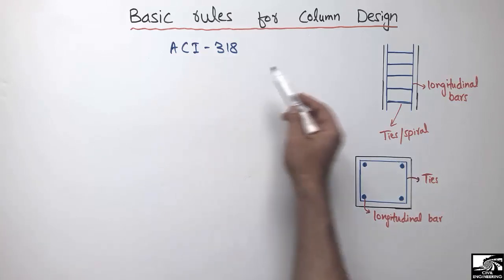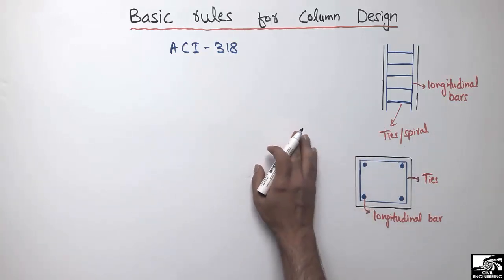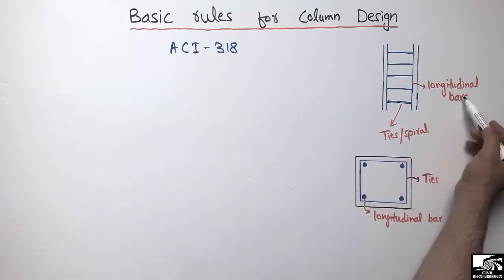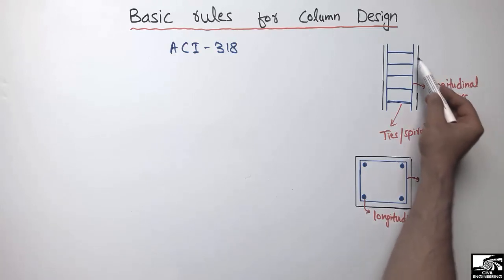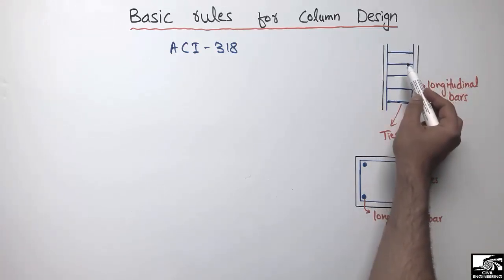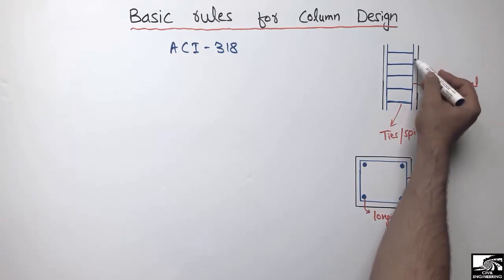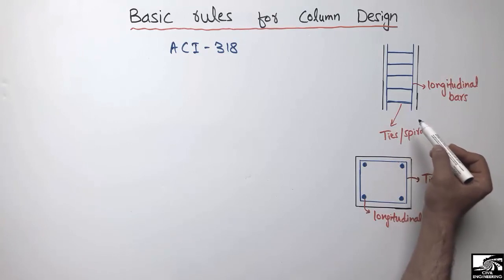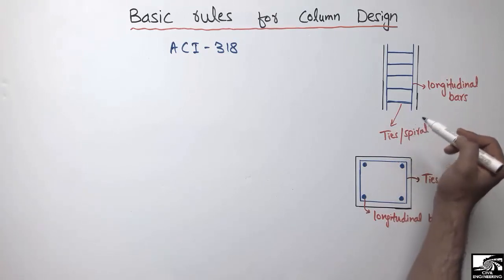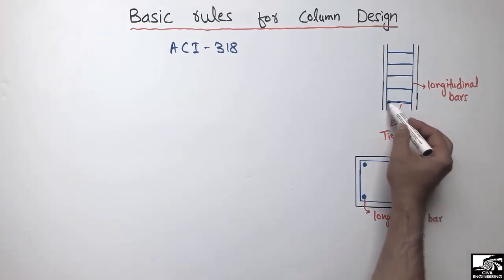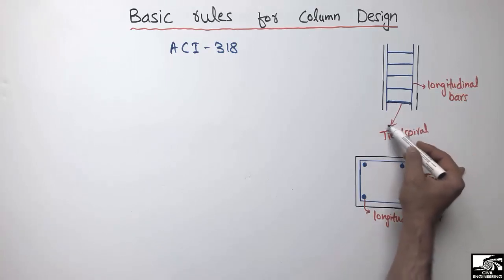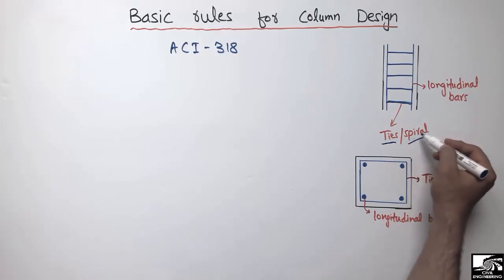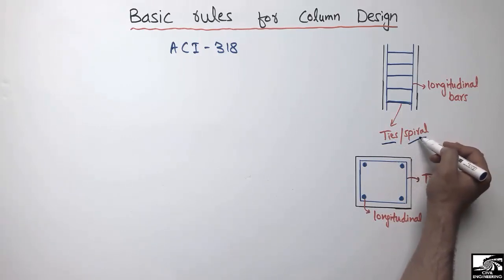As we know, the reinforced concrete column has two main types of reinforcement. One is called the longitudinal bars, or main bars, and these bars are provided to take the load from the upcoming structure members. The other type of reinforcement provided in the column is called shear reinforcement. In case of a rectangular column, these are known as ties, while in case of a circular column we call shear reinforcement as the spiral.